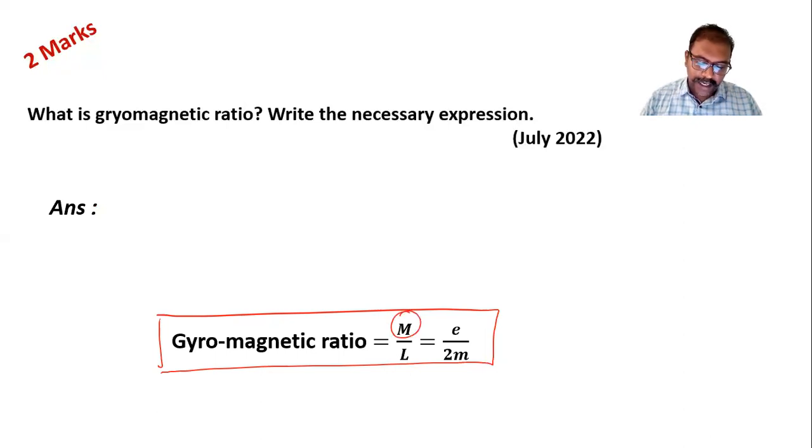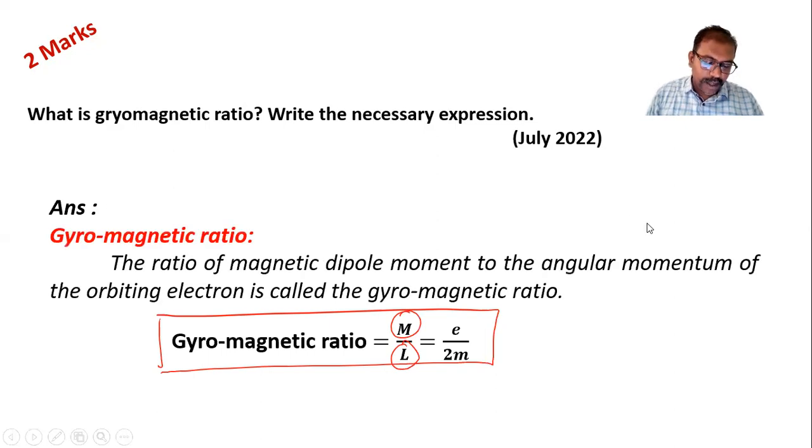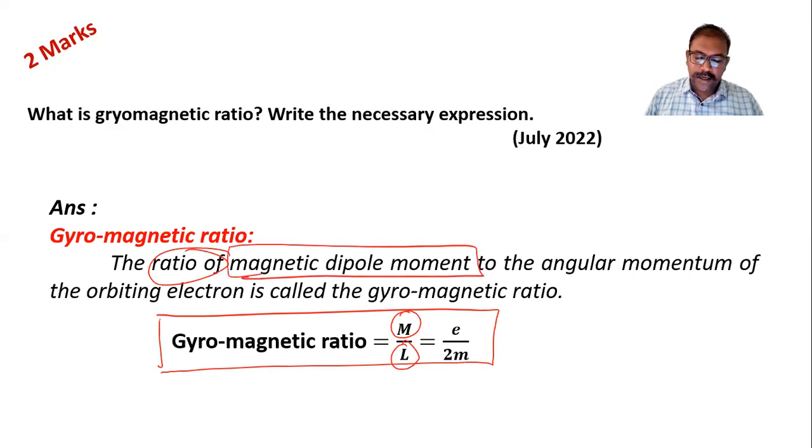So you can write ratio of this and this. The ratio of magnetic dipole moment to the angular momentum of the orbiting electron is called the gyromagnetic ratio.